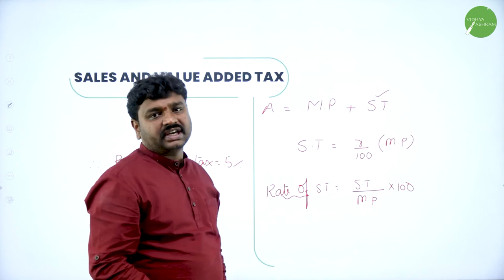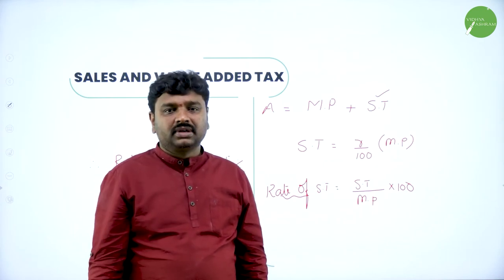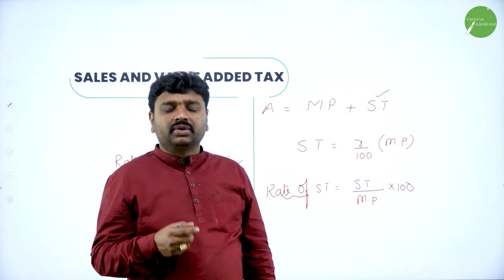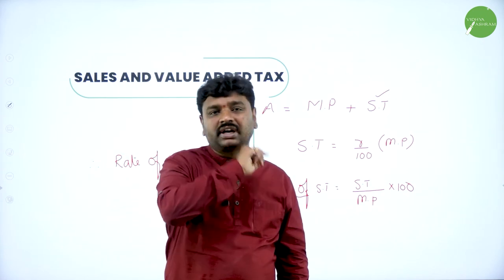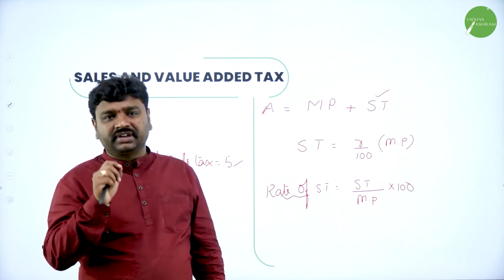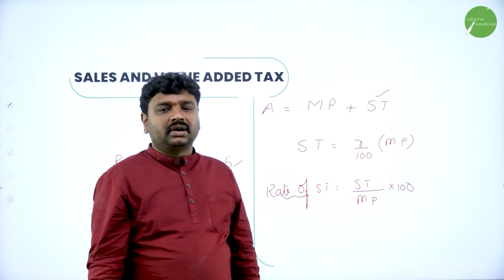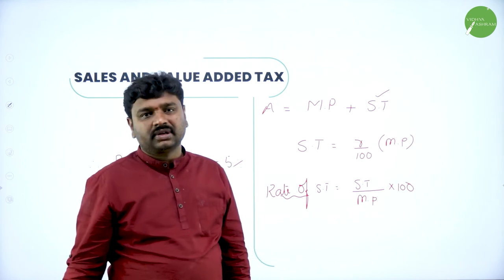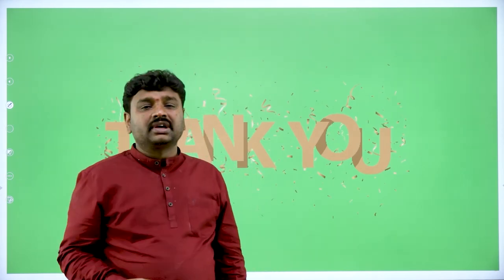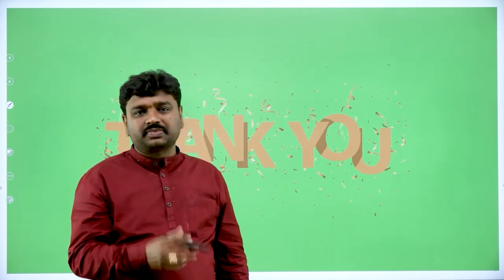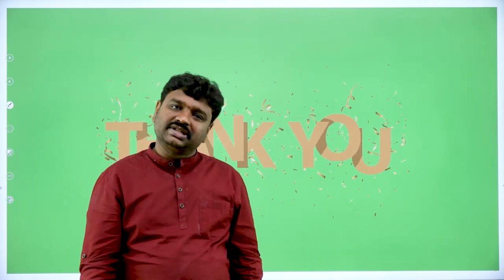I've discussed the basics of sale tax and problems of sale tax. For every good or item you purchase, you pay market price along with a tax called sale tax — which is calculated on market price. Rate of sale tax is sale tax by market price into 100. Total amount paid is market price plus sale tax. Sale tax is calculated as rate percent of sale tax into market price. I conclude this session — please revise the synopsis and we will do more problems of sale tax and VAT next session. Thanks for attending!